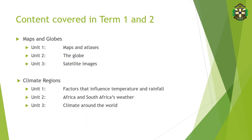We have covered this in Term 1 and 2 so far this year. We did maps and globes — just the basics of map work — how to calculate distance, reading coordinates, etc. Then climate regions: we focused on climate around the world, and then more specifically on Africa and South Africa's weather, as well as the factors that influence temperature and rainfall in South Africa, considering that we are surrounded by oceans.